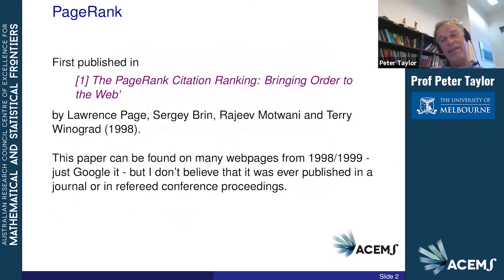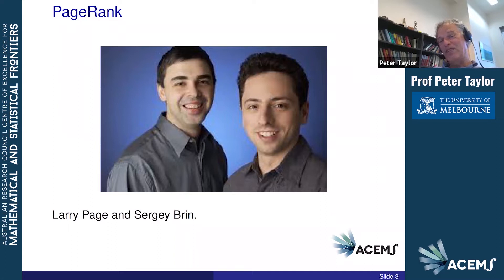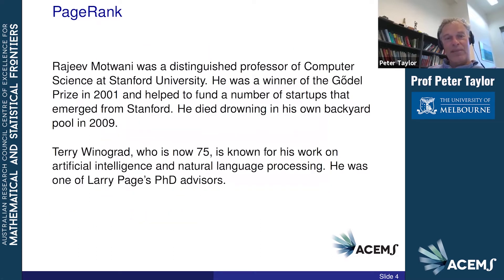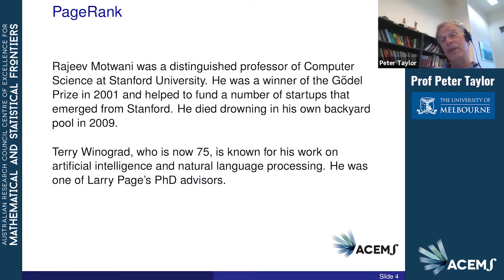But that's two people, and if you go back to the paper, there are four people whose names are on it — so what happened to the other two? Page and Brin were PhD students; I don't believe either of them ever finished their PhD. Rajeev Motwani seems to have been a very distinguished professor of computer science at Stanford who won the Gödel Prize in 2001 and helped fund a number of start-ups that emerged from Stanford. Unfortunately he died in an accident, drowning in his own backyard pool in 2009 — a very talented person the world sorely misses.